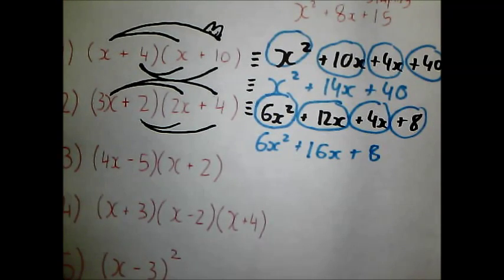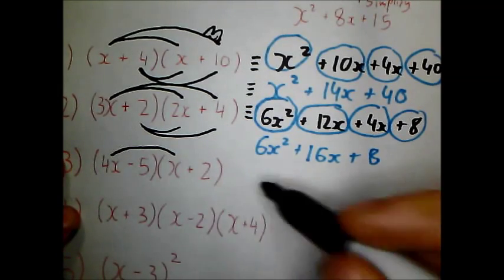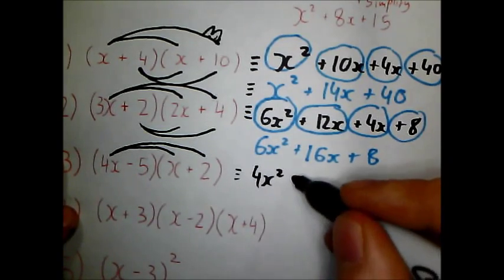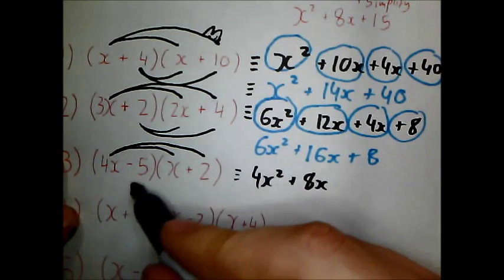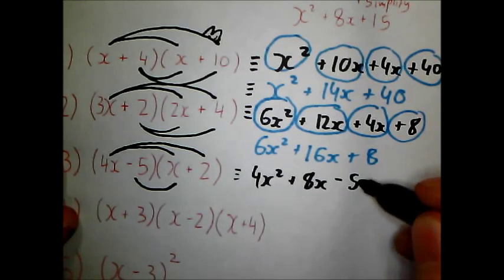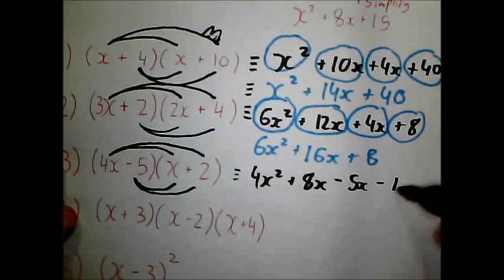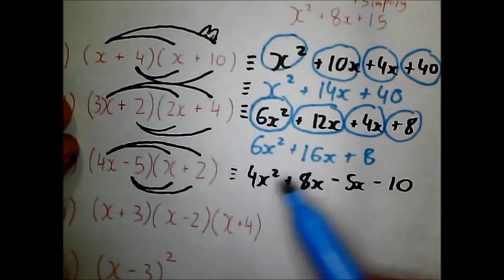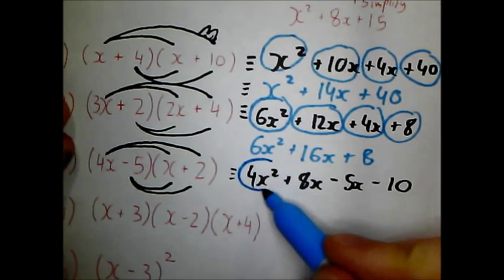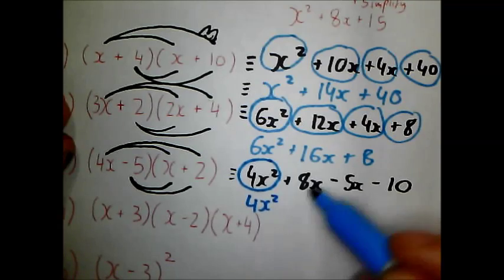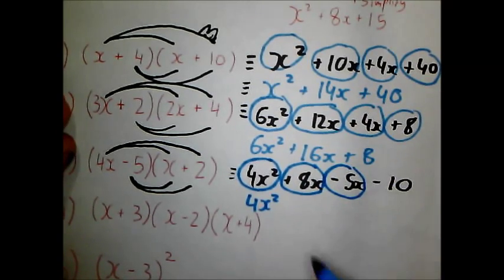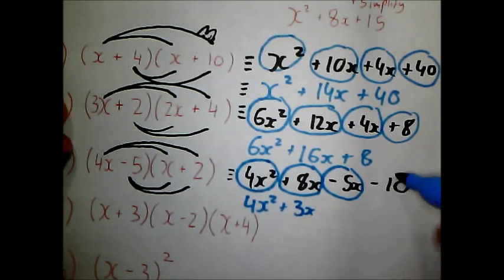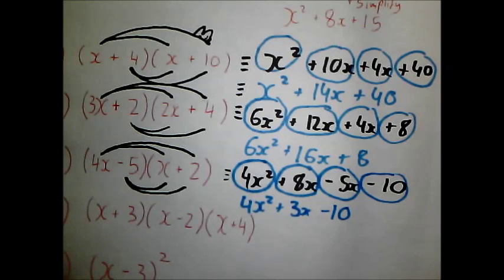Okay next question. I have 4x times x. That is 4x squared. I've got 4x times 2 is positive 8x. I have negative 5 times x. This is negative 5x. And negative 5 times positive 2 is negative 10. I then look for my similar things to simplify. So 4x squared. No other x squareds. That stays the same. I have an 8x and a negative 5x. So that combines to give positive 3x. So if you start at 8 and go down by 5 you'll end up at positive 3. And then a minus 10. Negative 10 left over.